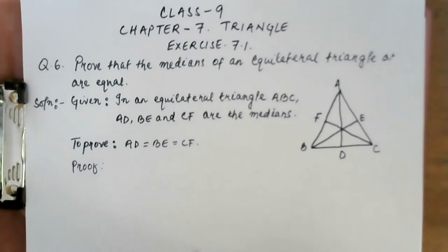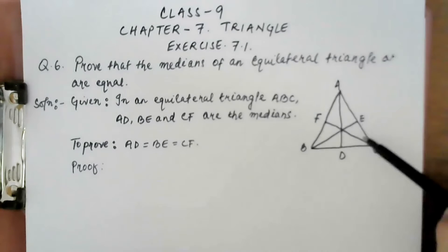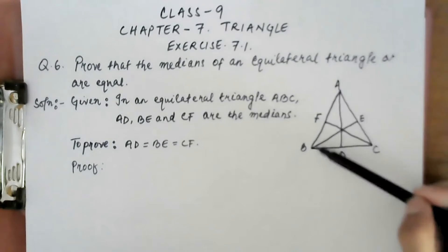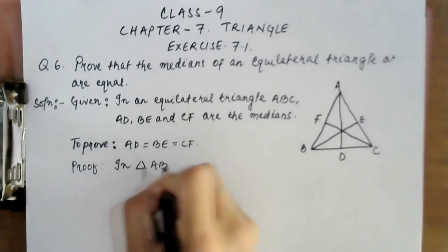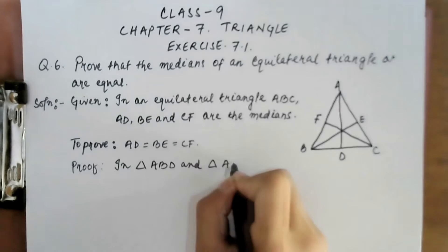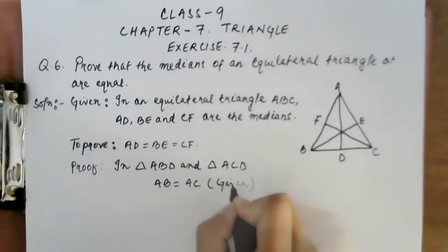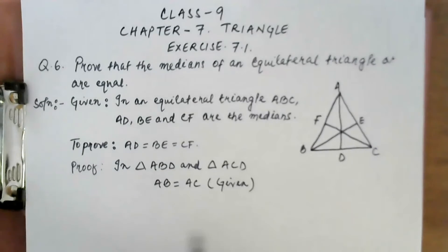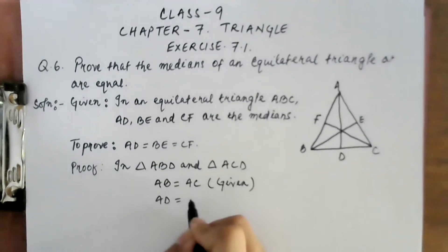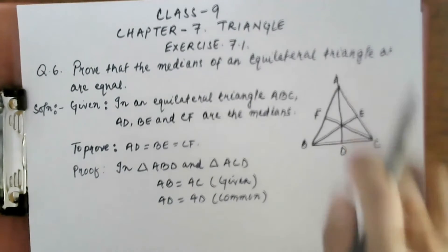In the proof, we compare triangles. Because of median AD, triangle ABC is divided into two triangles: triangle ABD and triangle ACD. In triangle ABD and triangle ACD: AB = AC, this is given, because ABC is an equilateral triangle so the sides are equal. Also, AD = AD, which is common to both triangles.